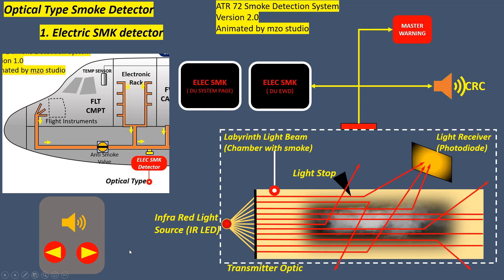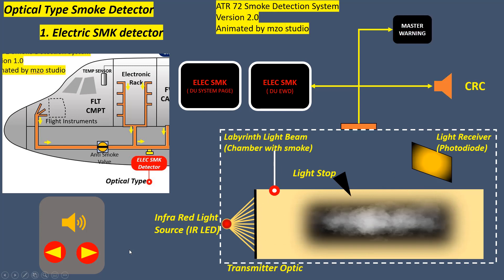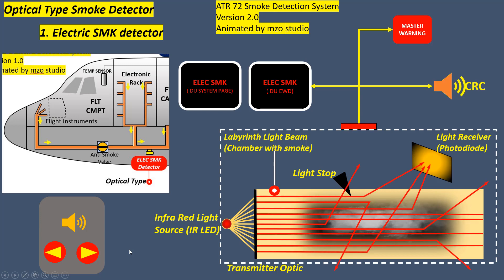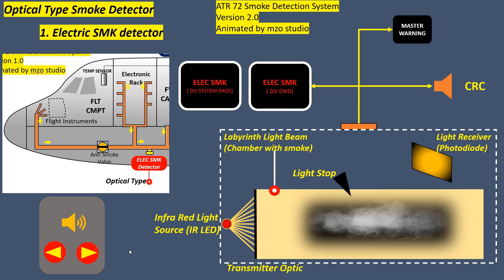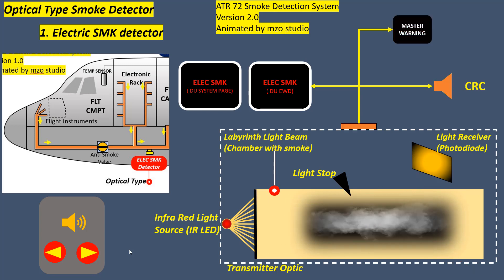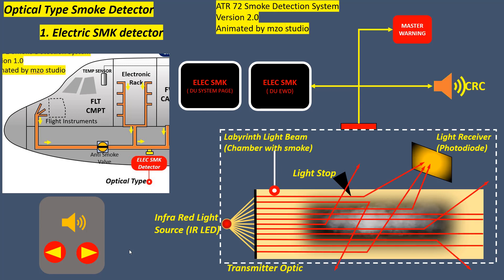When smoke particles are present in the optical path, the light source is deflected to the photo diode. The electrical signal is processed by the electronics. When the preset threshold is reached, the circuit generates a warning signal.